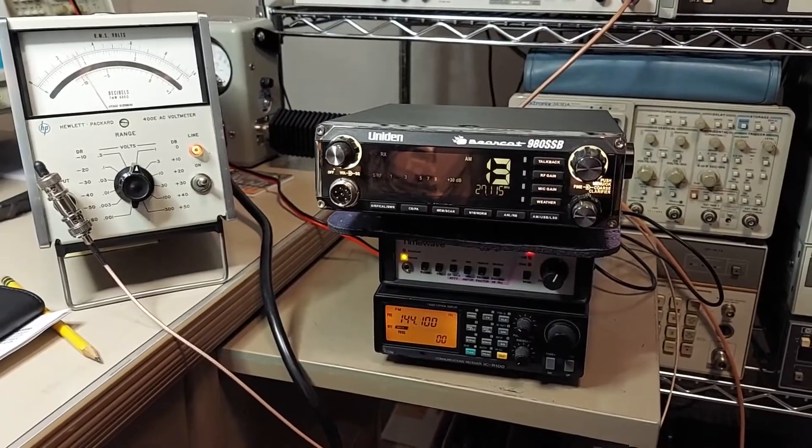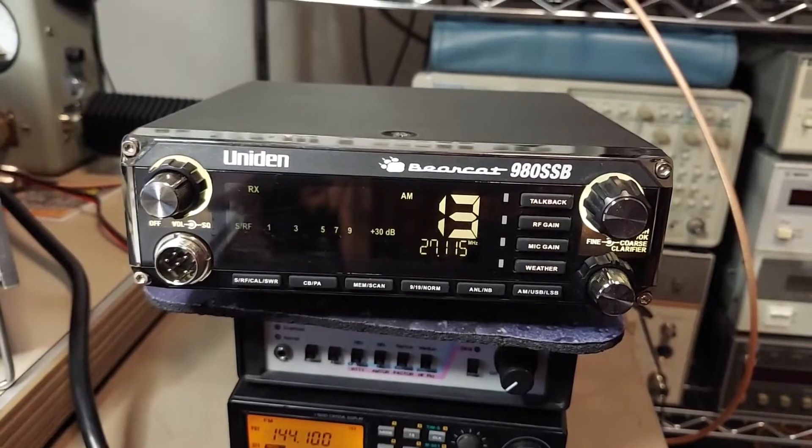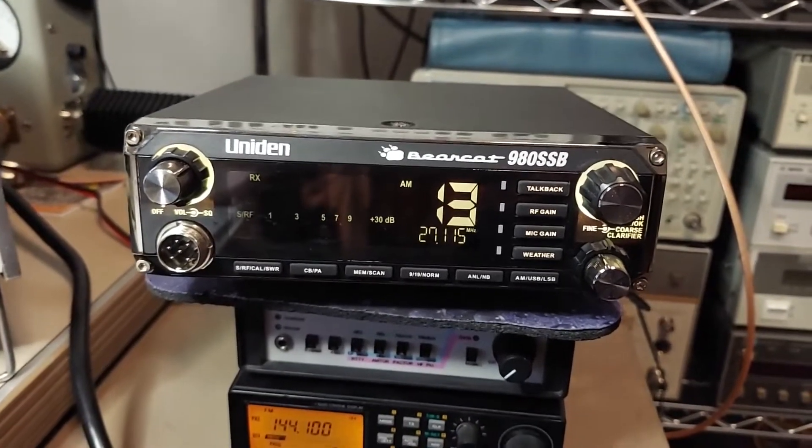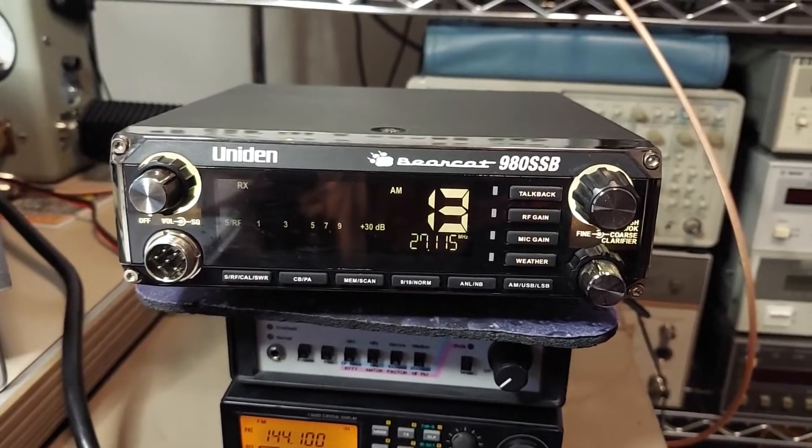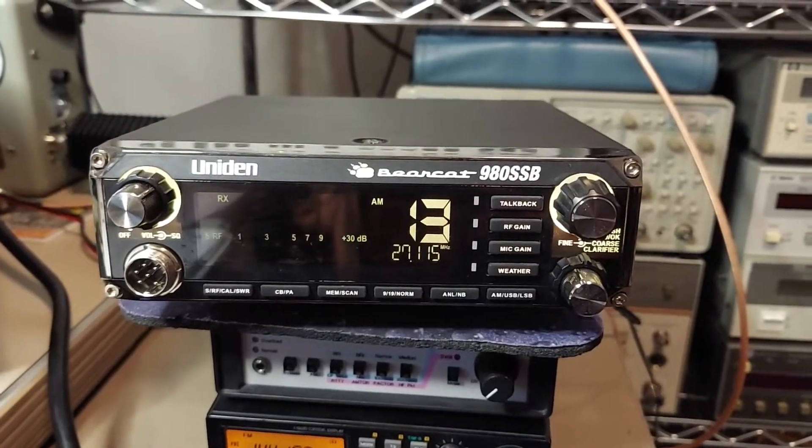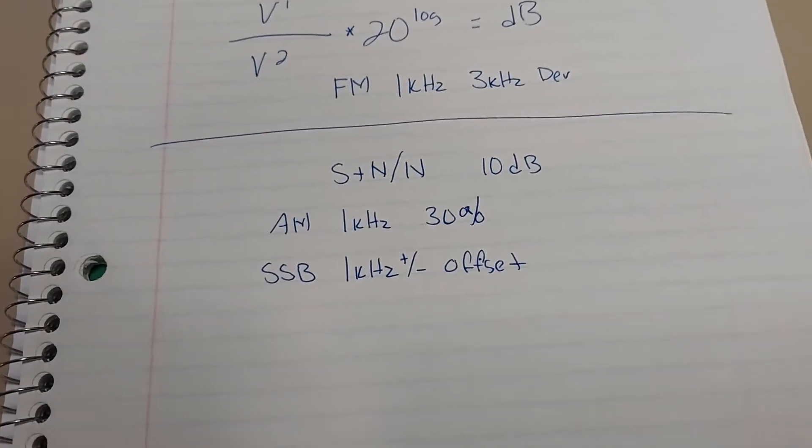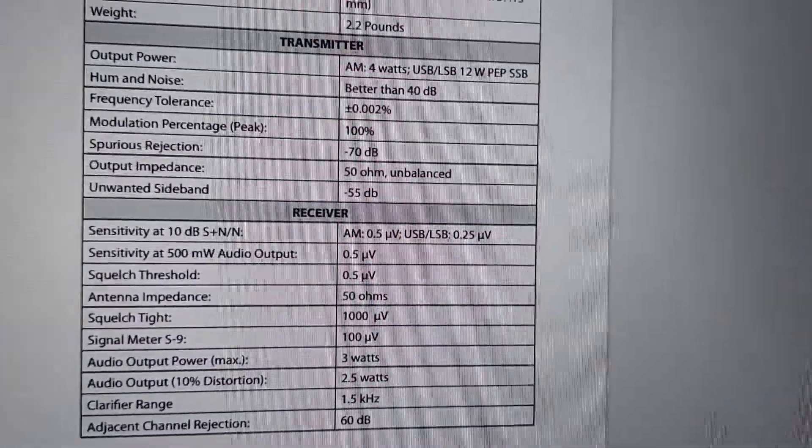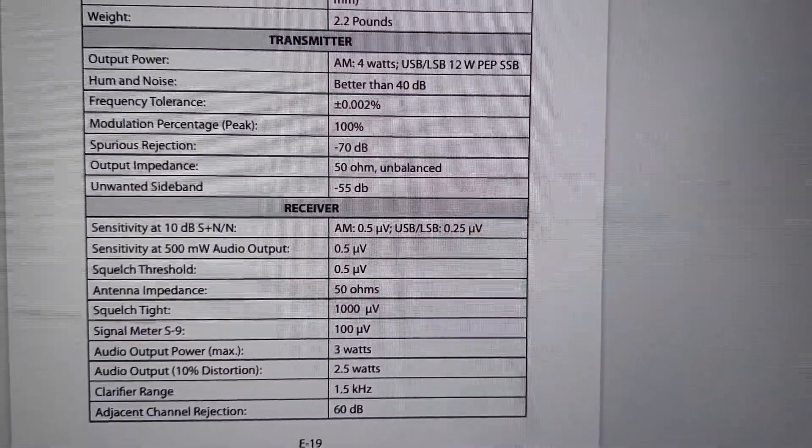The first radio we're going to test here is this Bearcat. I've tested this before and the last measurements showed this radio was deaf by about 10 dB, so we're going to confirm it with this test. Because the last test I used was SINAD, we're going to use the signal plus noise over noise test. According to the manual, the output should increase at the speaker by 10 dB at half a microvolt.